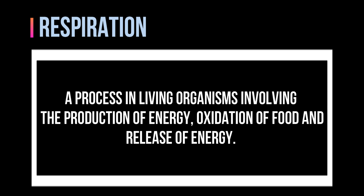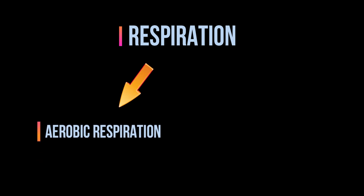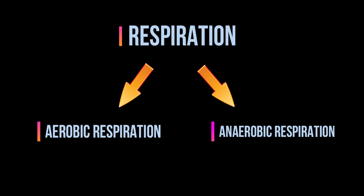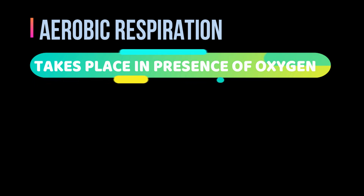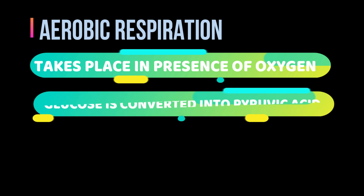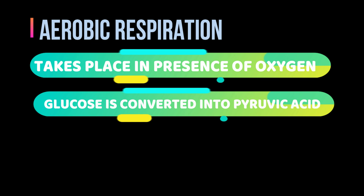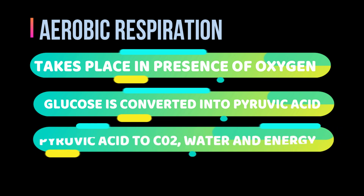We can divide respiration mainly into two types: aerobic respiration and anaerobic respiration. Aerobic respiration is the type of respiration which occurs in the presence of oxygen — the breakdown of food occurs in the presence of oxygen. In this type, glucose converts into pyruvic acid, and this pyruvic acid converts into carbon dioxide, water, and releases energy.